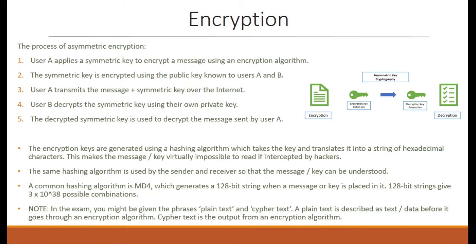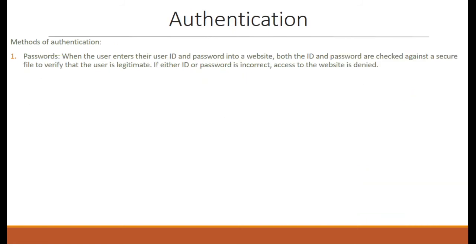128-bit strings give 3 times 10 to the power 38 possible combinations. Note: in the exam, you might be given the phrases plain text and ciphertext. Plain text is described as text or data before it goes through an encryption algorithm. Ciphertext is the output from an encryption algorithm. Moving on to the methods of authentication. Authentication is basically the process of verifying the identity of a person or device. Method 1: Passwords. When the user enters their user ID and password into a website, both the ID and password are checked against a secure file to verify that the user is legitimate. If either ID or password is incorrect, access to the website is denied.